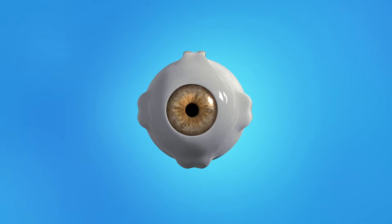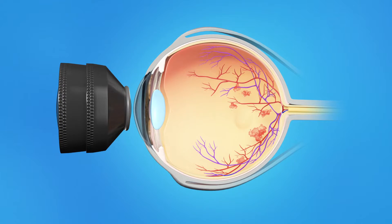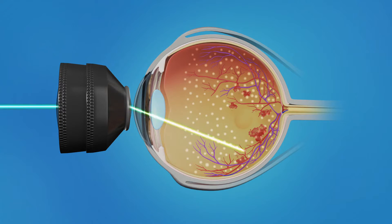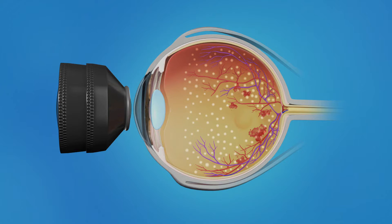Your ophthalmologist has recommended a form of laser treatment called panretinal laser photocoagulation, or PRP. It is also known as scatter photocoagulation. This laser treatment helps stop abnormal blood vessels from growing and bleeding. PRP is usually performed in the office and generally takes around 15 minutes. An anesthetic is used to numb your eye, and a special contact lens is placed on your eye to help keep it from moving and to focus the laser. It is important to keep your eyes as still as possible during the treatment.